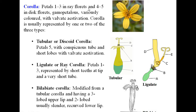Corolla: petals 1 to 3 in ray floret and 4 to 5 in disc floret. Gamopetalous — gamopetalous means petals are fused to each other, while polypetalous means petals are free. The corolla is variously colored with valvate aestivation. Corolla is usually represented by one or two of three types: first, tubular or discoid corolla with petals 5, connation 2, and short lobes with valvate aestivation; second, ray floret or ligulate corolla with petals 1 to 3 represented by short teeth; third, bilabiate corolla with upper lobe trifid and lower lip two-lobed.